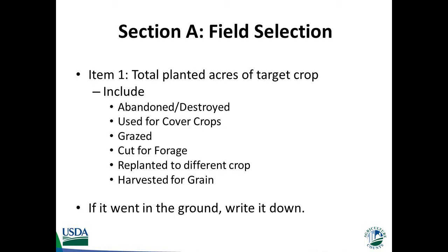Focusing on the individual questions in Section A, Item 1 asks you to record the total planted acres of the target crop. You want to be sure to probe to include any acres that might have been abandoned or destroyed, used as cover crops, grazed off, cut for forage, replanted to a different crop, or harvested for grain as initially intended. The only thing you would want to exclude would be target crop acres on land that is rented to another operator. Simply put, if it went in the ground, you want to write it down.